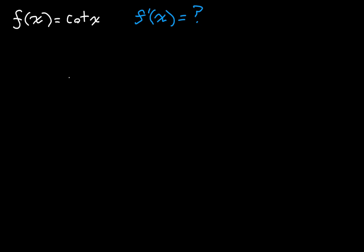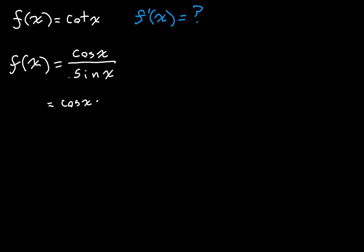Just like what we've done in the last videos, all we're going to do is take this function f of x and make it a little bit simpler in terms of taking the derivative. We know that the cotangent of x is actually the cosine of x over the sine of x. But this is where it starts to get a little tricky, because unlike in the last videos, we don't really have a simple outer function and inner function. If we break this down even further, what we have is cosine of x times 1 over sine of x. So we have these two separate functions. This one on the right is cosecant of x, but I'm just going to write it as 1 over sine of x for now.